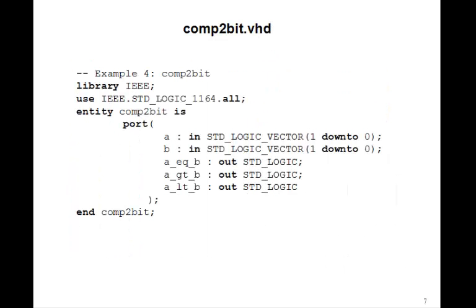So we can write our VHDL program. Here's the entity. The input A and B are each one down to zero, two bits. And the outputs A equal B, A greater than B, and A less than B are of type standard logic.